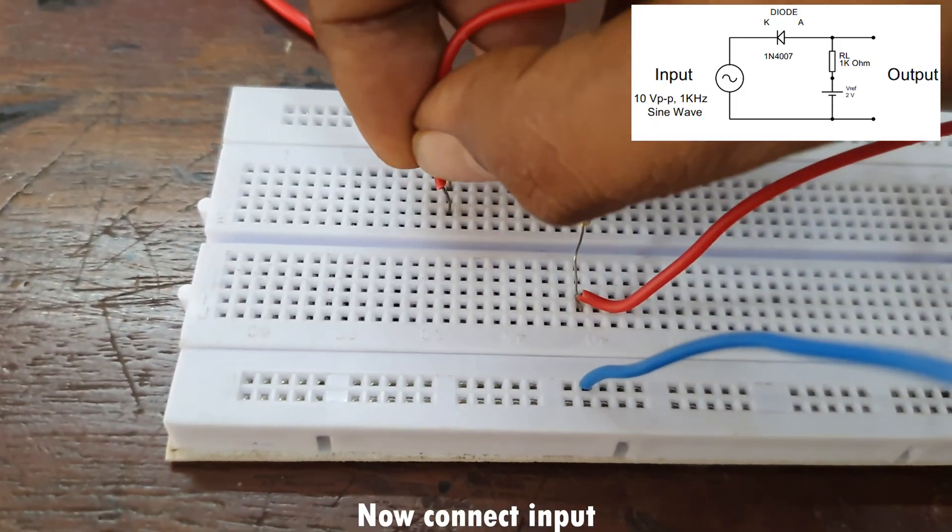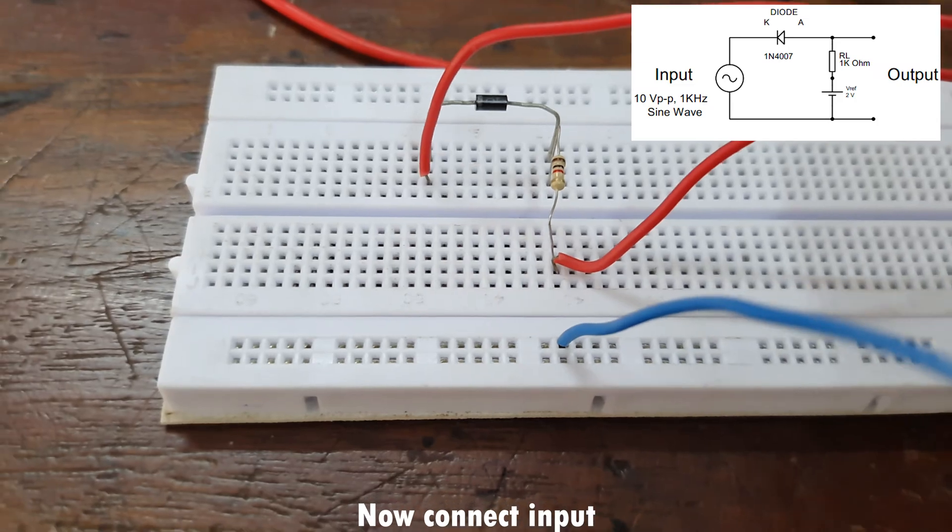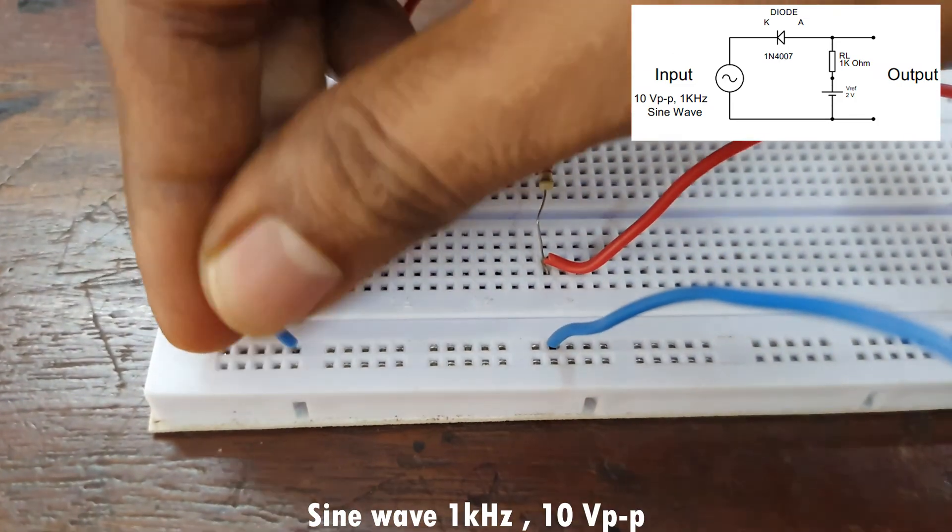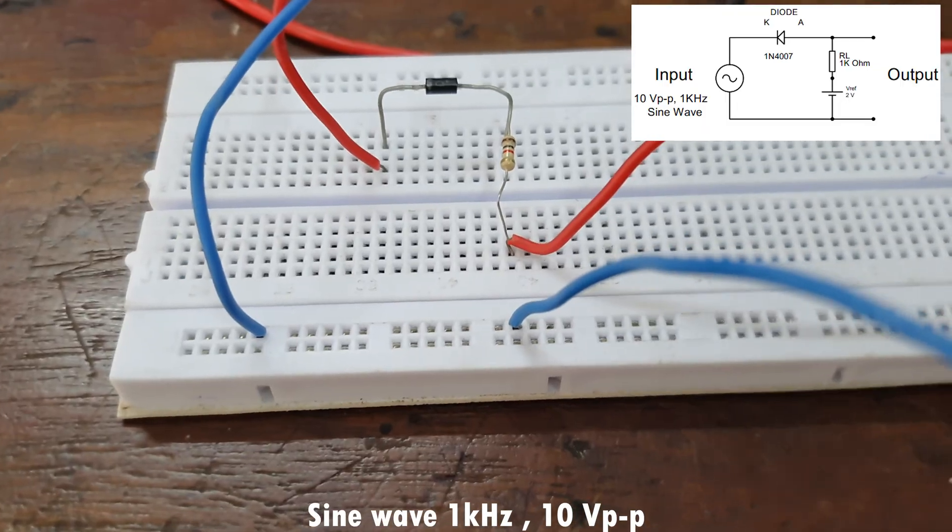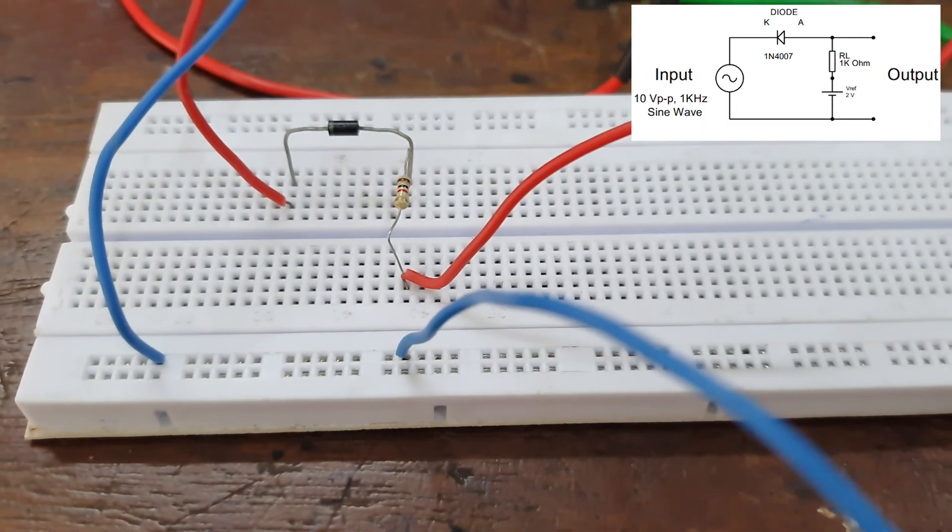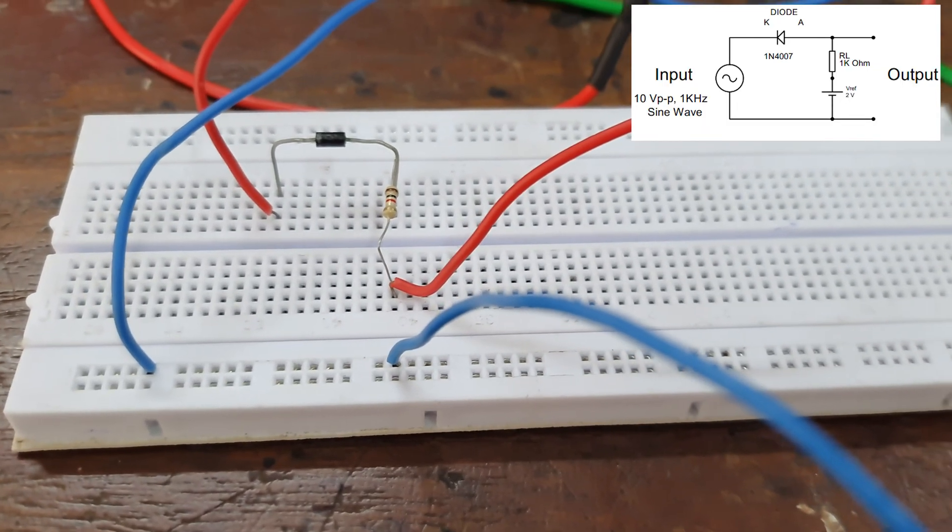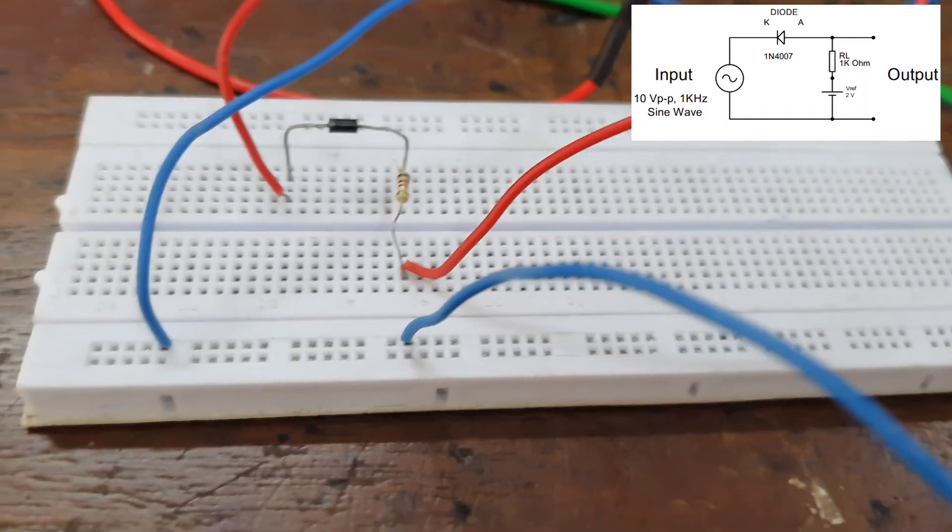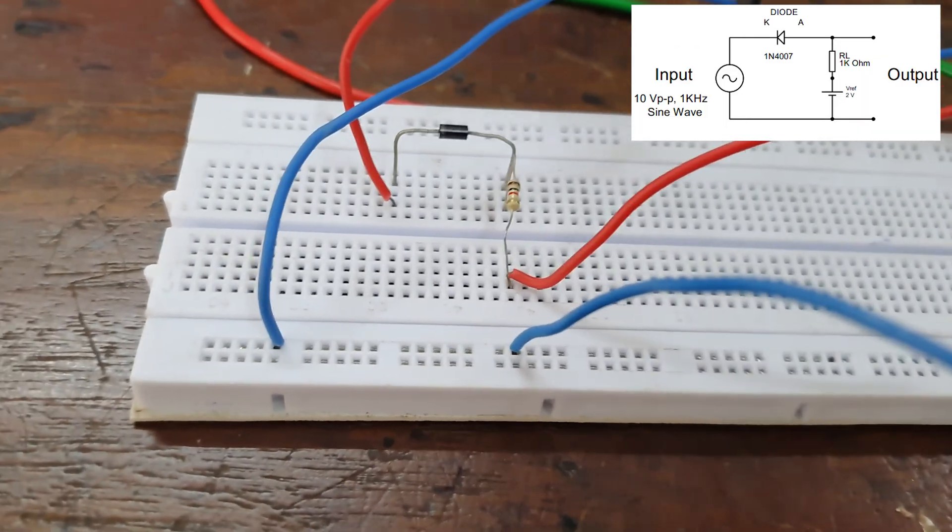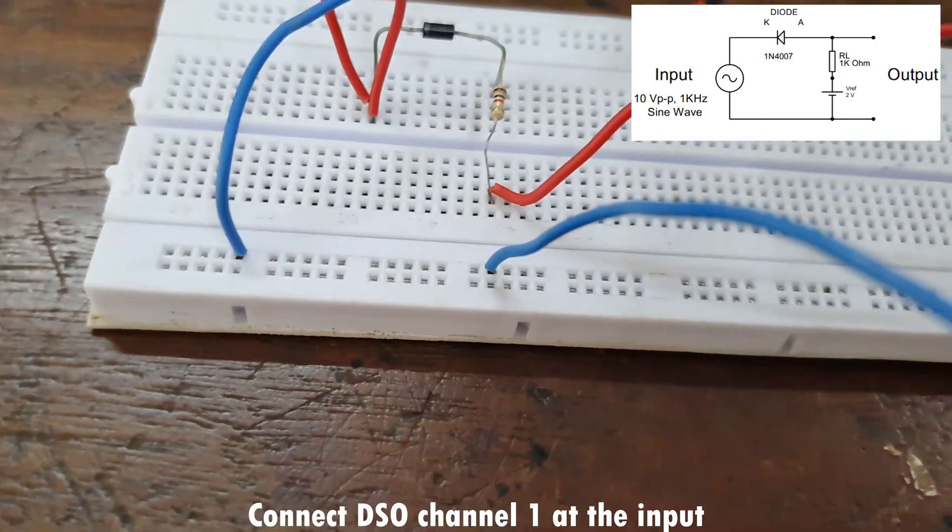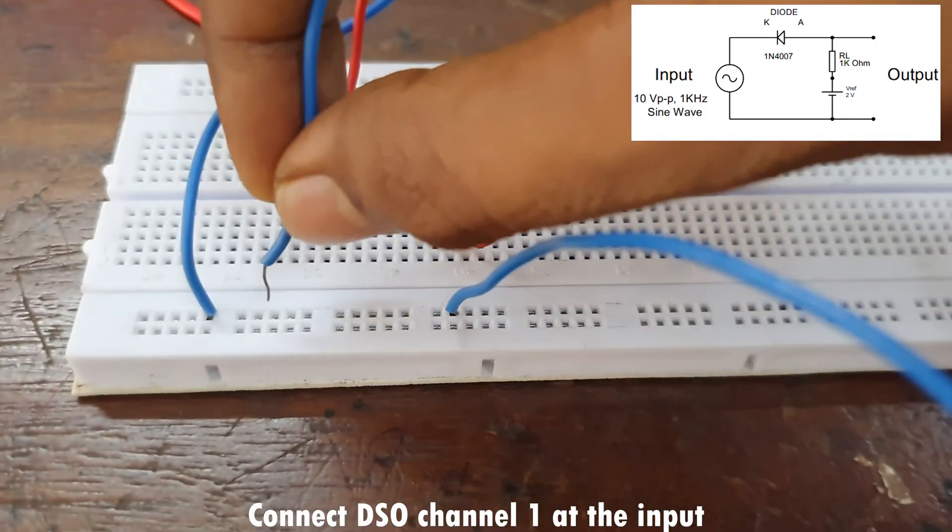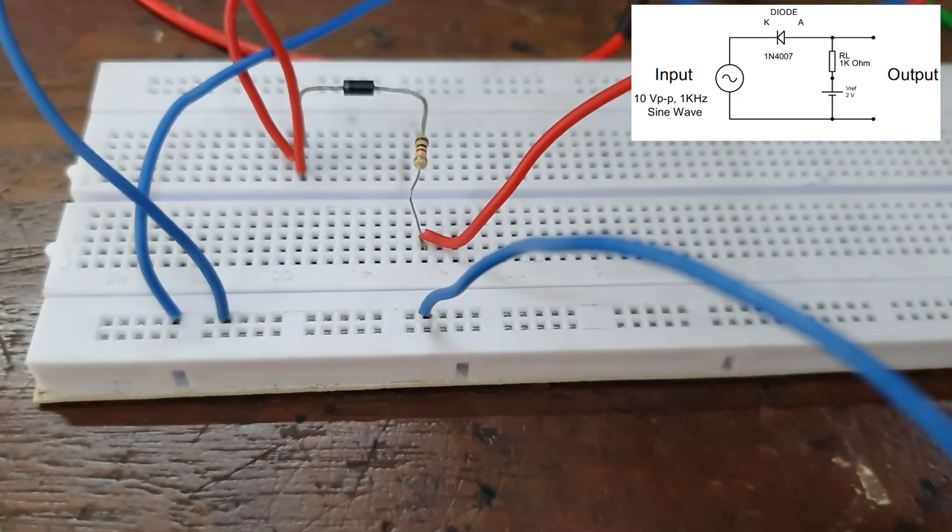Now connect the input to the circuit. We are giving a 1 kilohertz, 10 volt peak-to-peak sine wave as the input. Then connect the DSO channel 1 at the input to see the input waveform.